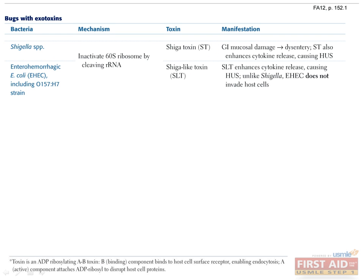Next, among the bacteria which inhibit protein synthesis, we have Shigella and enterohemorrhagic E. coli. Shigella produces Shiga toxin. E. coli O157:H7 releases Shiga-like toxin, which also inactivates the 60S ribosome subunit. But unlike Shigella, E. coli O157:H7 does not actually invade the epithelial cells of the colon.